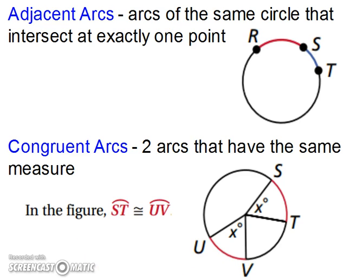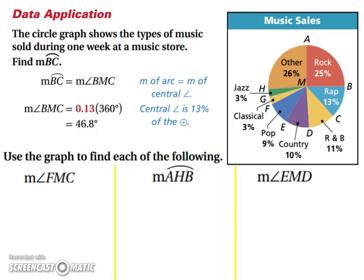Let's try a couple examples. The circle graph shows the type of music sold during one week at a music store. Find the measure of arc BC. Well, we know that the measure of arc BC is going to be equal to the measure of angle BMC. We can use that because we know that the measure of angle BMC is 13% of the entire circle. Well, a circle is 360 degrees.